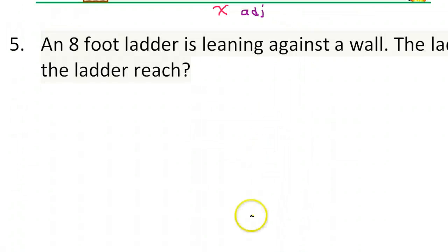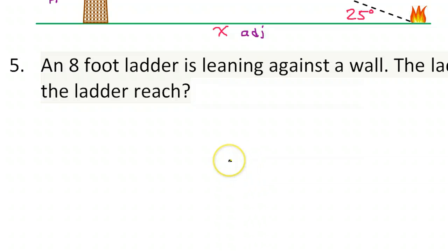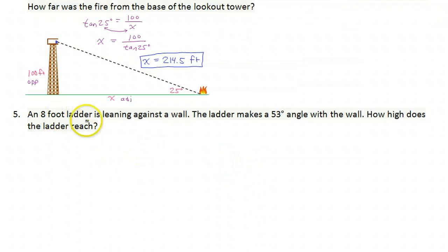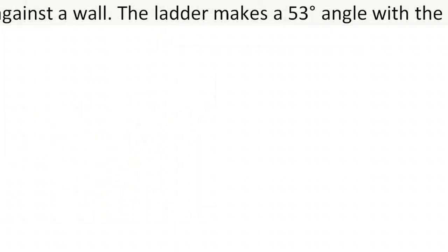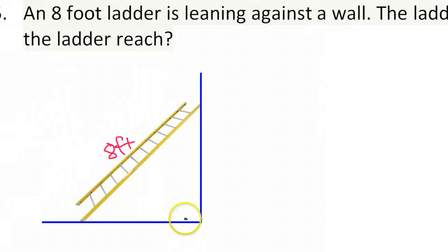Number five, and this is the last problem. An eight foot ladder is leaning against a wall. The ladder makes a 53 degree angle with the wall. How high does the ladder reach? So we're talking about an eight foot ladder. I'll put the eight feet right there. And they said it makes a 53 degree angle with the wall. So here's the wall, so this must be our 53 degree angle. And we're supposed to find how high does the ladder reach. So we're trying to find out this distance right here from the ground to the top of the ladder.